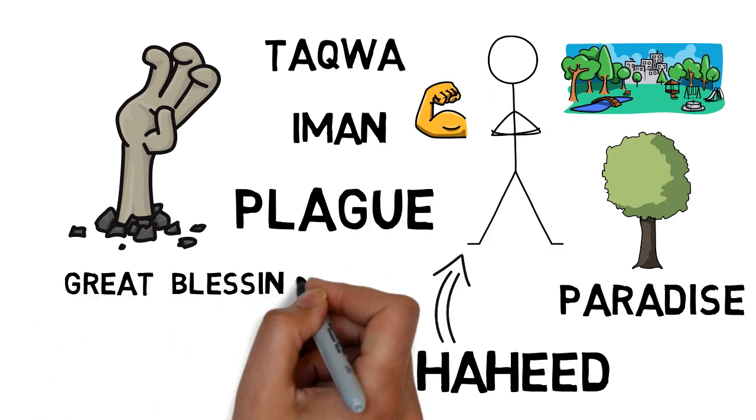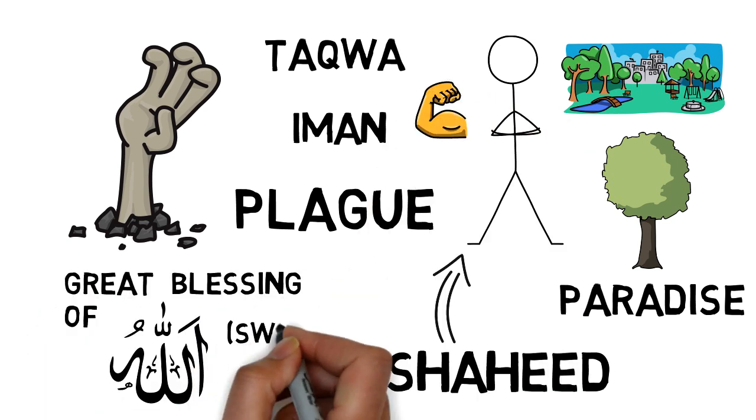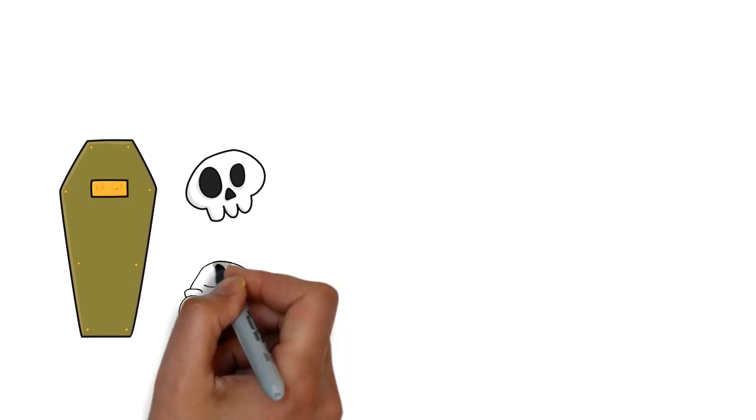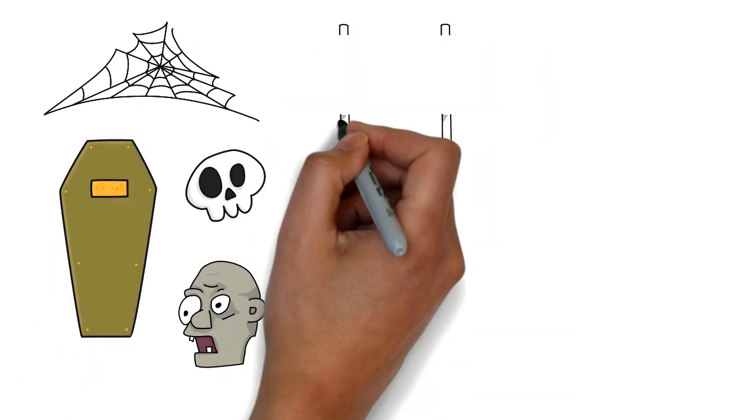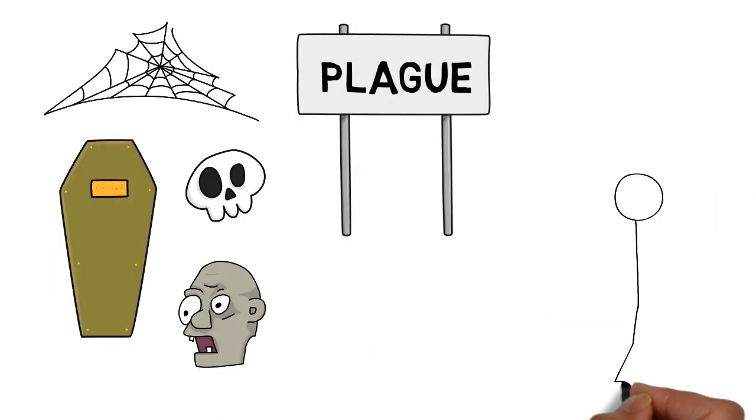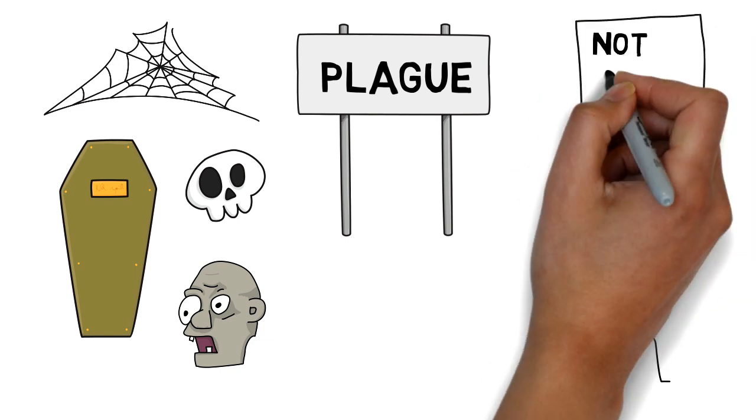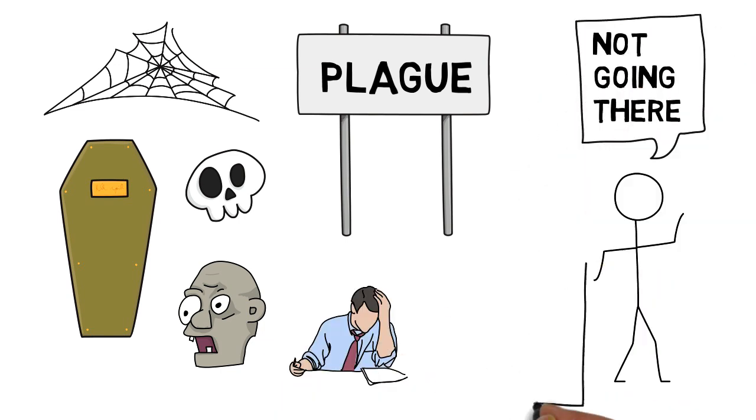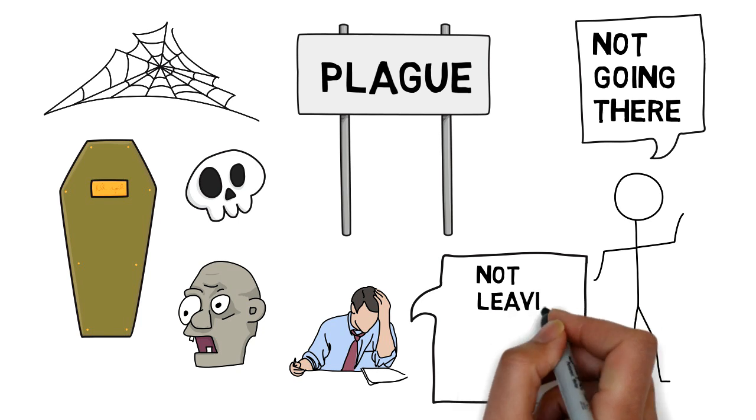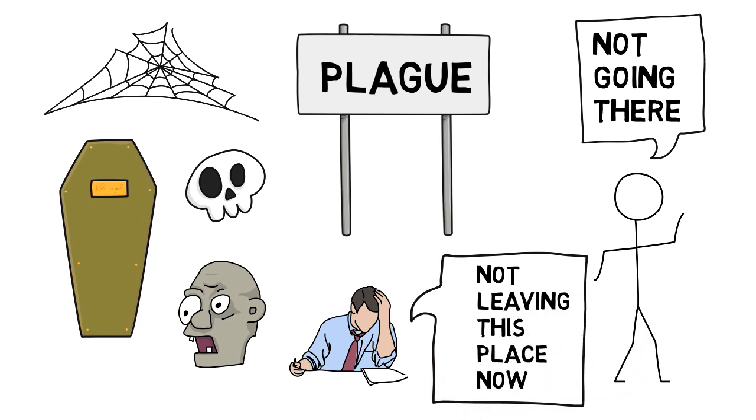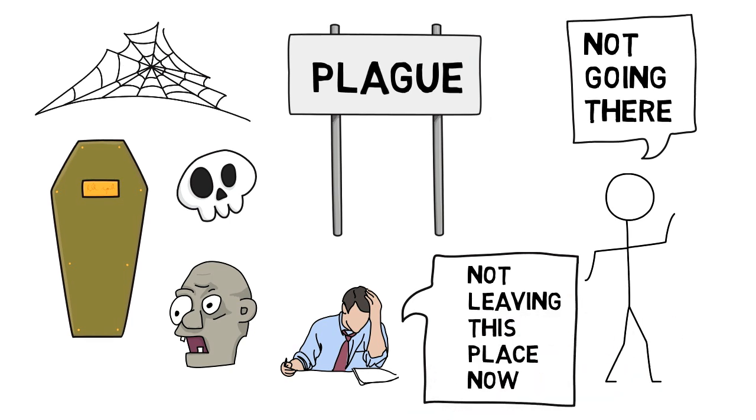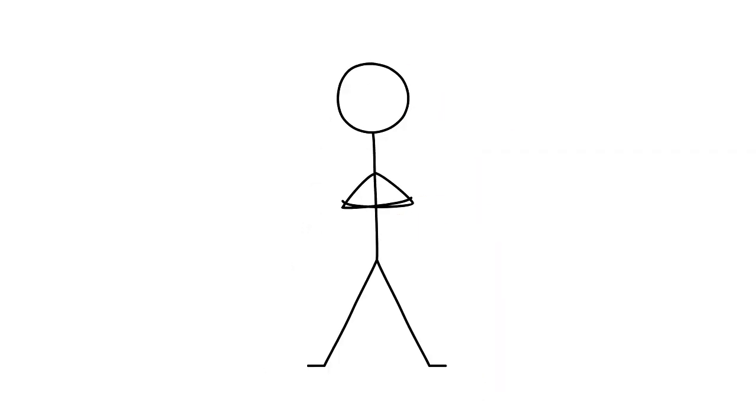Running away from plagues, fleeing from plagues, and of course the famous hadith which is the hadith of Abu Ubaid and Umar and Abdul Rahman ibn Auf: that if you hear of a plague in another land, don't go there, and if you're in that land, don't run away from it. And then he mentions when is this hadith applicable and when is it not applicable.